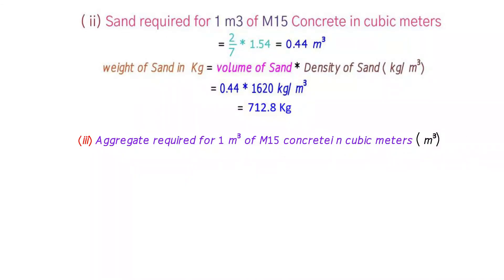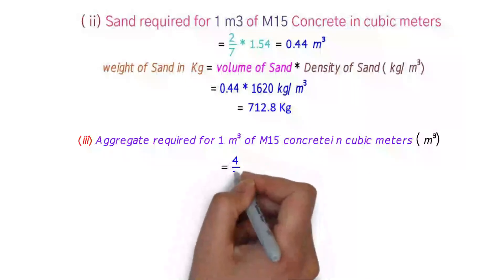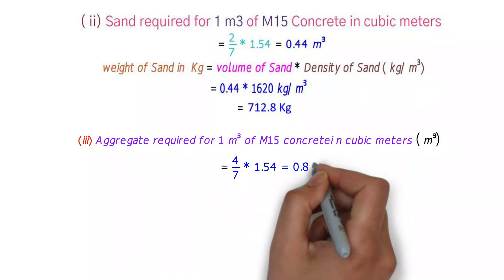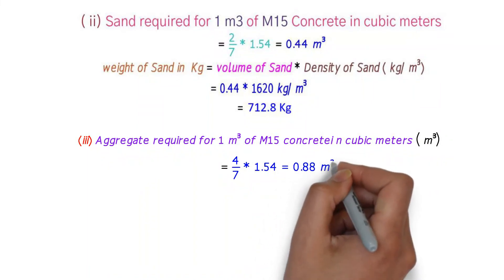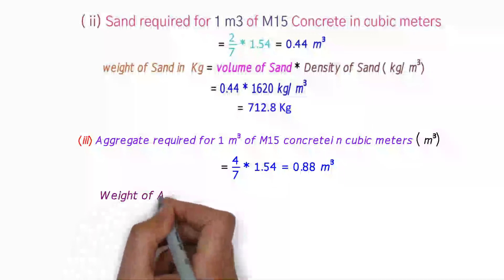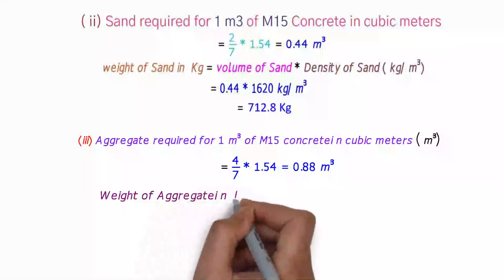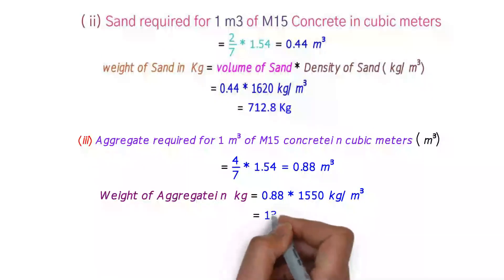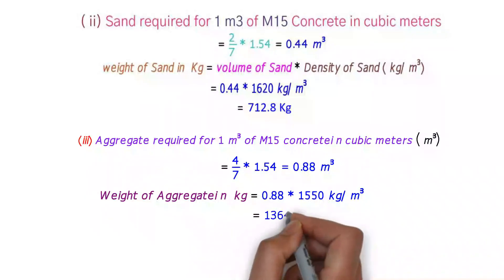The aggregate required for one cubic meter of M15 grade concrete is (4/7) × 1.54, which equals 0.88 cubic meters. The weight of aggregate is 0.88 × 1550, which equals 1364 kg.